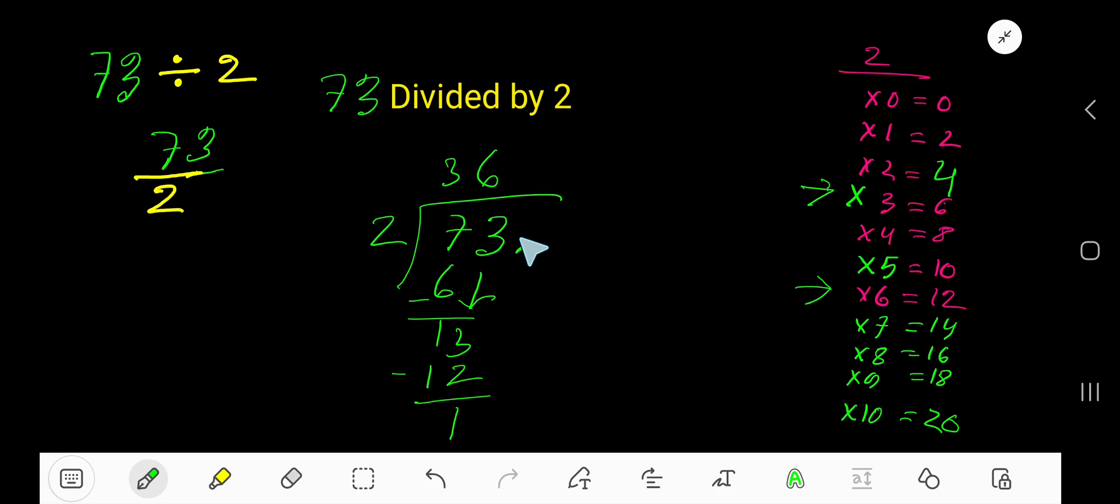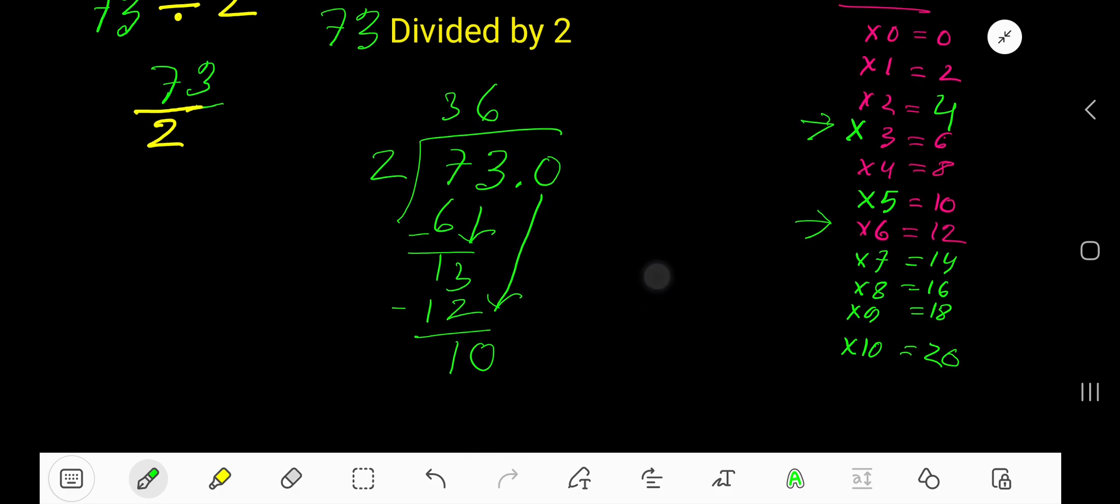Just take decimal and you are allowed to take any number of zeros. Bring down the first zero. But before the zero there's a decimal, the decimal must come to the quotient directly. 2 goes into 10 how many times? 5 times. 5 times 2 is 10. Subtract, we get 0.